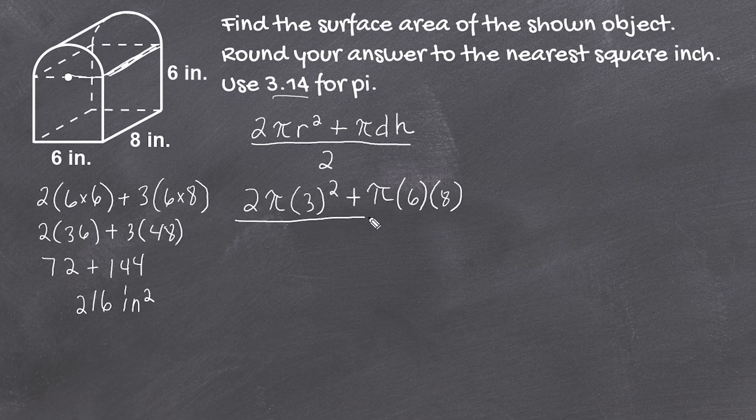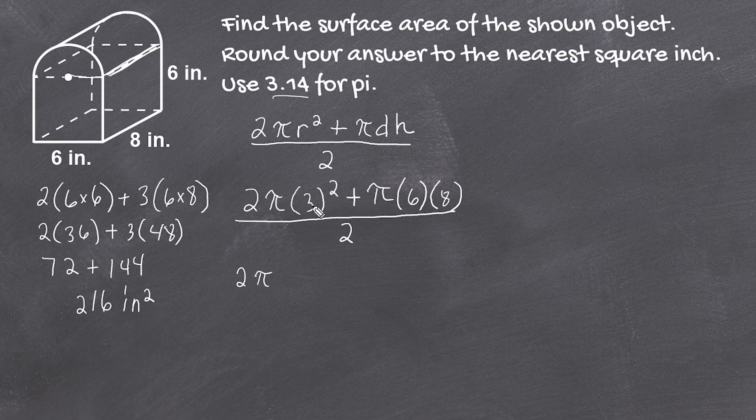Remember we have to divide this entire expression by 2. Let's simplify. We have 2 times pi times 3², which is 9, plus 6 times 8, which is 48π, all divided by 2.